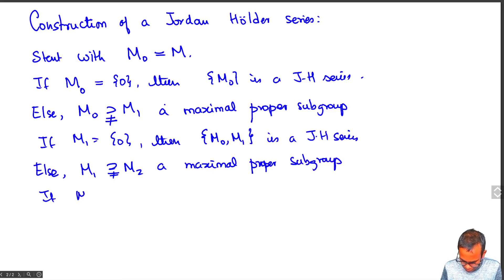If M2 is trivial, then M0, M1, M2 is a Jordan-Hölder series.